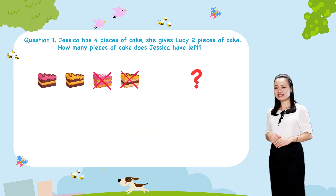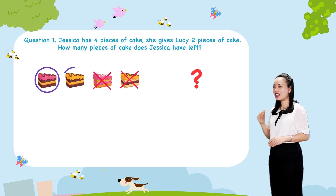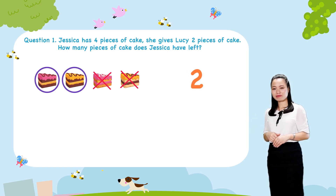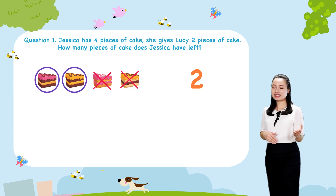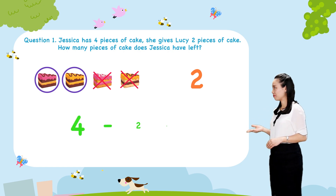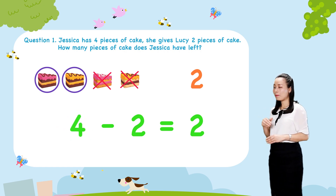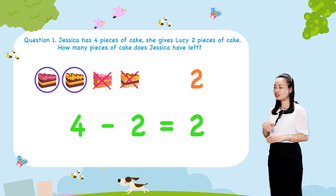Let's find the answer together. You can see, Jessica has one, two — two pieces of cake left. We write in numerals. We say: four minus two equals two.